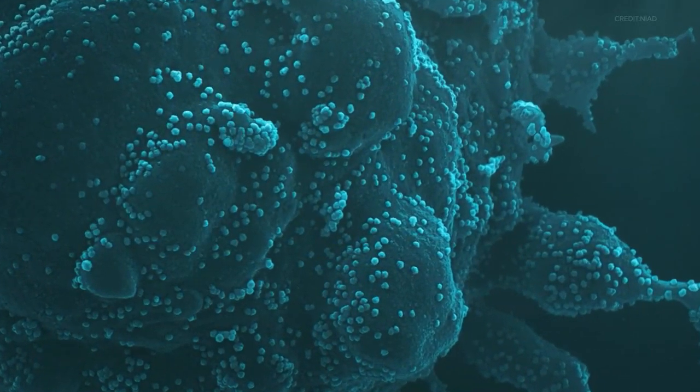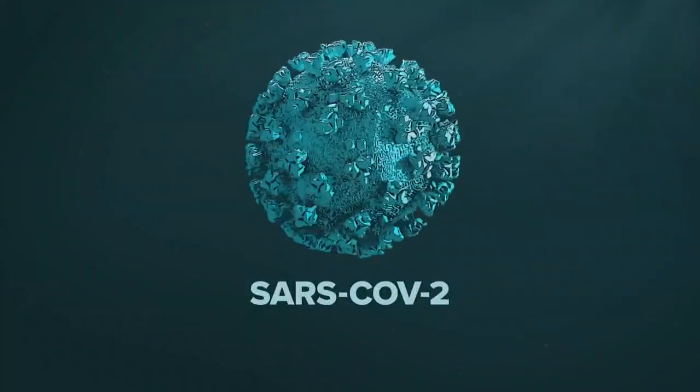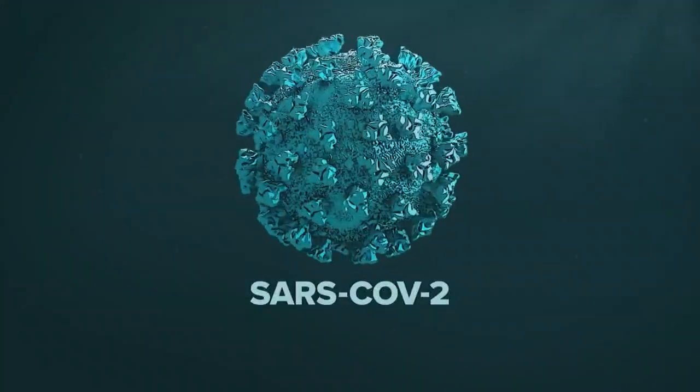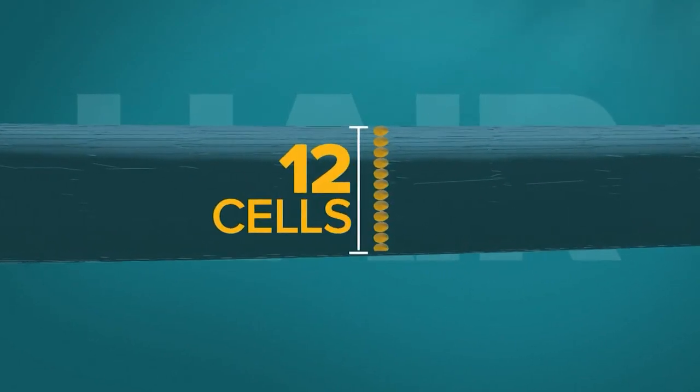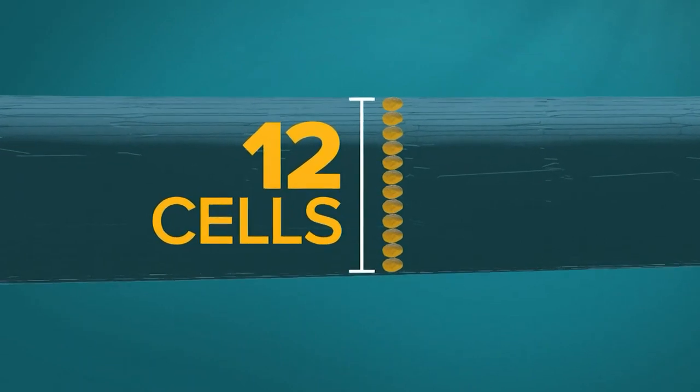You've seen pictures of the coronavirus, but what really makes this spiky ball tick? It's too tiny to see with the naked eye, so you have to think small. Picture just one strand of hair and stretch it out. Imagine laying a dozen cells across that strand of hair. That's about how big some of your lung cells are.